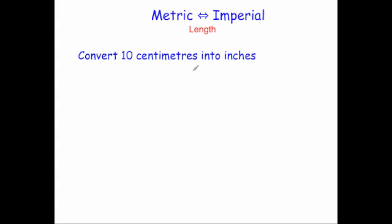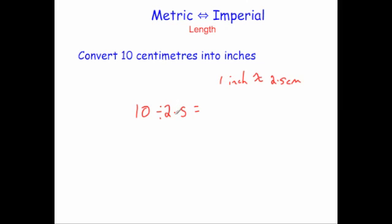Convert 10 centimeters into inches. Remember that 1 inch is approximately equal to 2.5 centimeters, so to go from centimeters into inches we divide by 2.5. We do 10 divided by 2.5. Since 2.5 + 2.5 + 2.5 + 2.5 = 10, the answer is 4. So 10 centimeters is approximately equal to 4 inches — if you look at your ruler that will give you a rough idea.